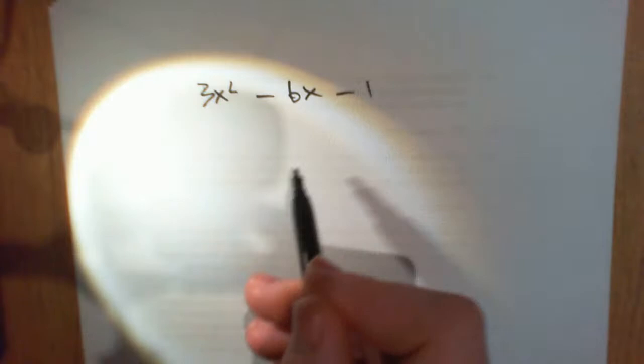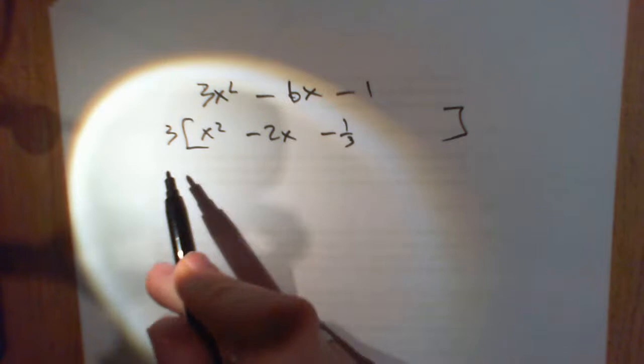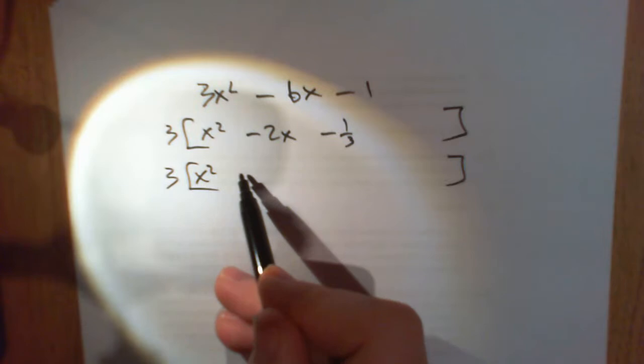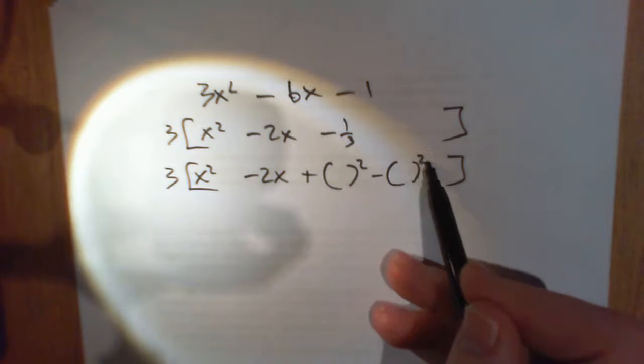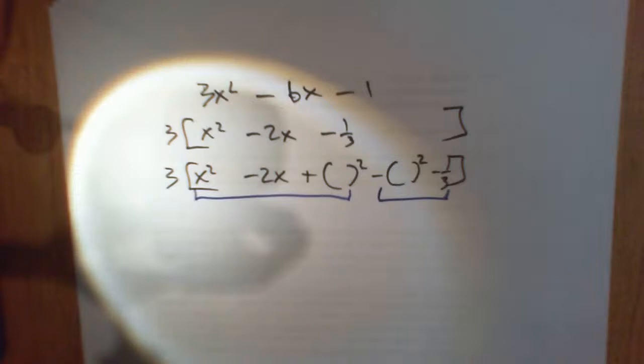I'll do another one. Same thing again, go a bit faster this time. 3x² - 6x - 1. Same thing again, factorize out the 3. And I put x² minus 2x minus a third. Same thing again: 3, leave that, leave that. We're going to add something squared, take away something squared, and then the third is there. Remember, these three things are going to form my bracket with the squared. These two things will form my new constant.